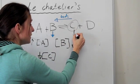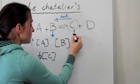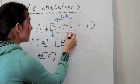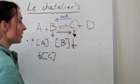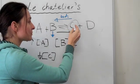If that drops, if that C value drops, then you're going to be going forward. A and B are going to be reacting in order to produce more of C.